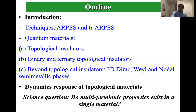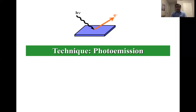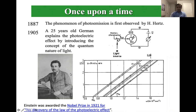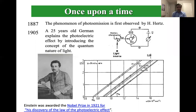Let's talk about the technique. Photoemission is simply a photon-in, electron-out process. You strike your sample with a photon and due to the photoelectric effect, electrons come out. This was observed by Hertz in 1887 and later explained by Einstein considering the quantum nature of light. The equation is: hν = hν₀ (work function) + E_B = ½mv², the basic photoelectric effect. Einstein was actually awarded the Nobel Prize for the discovery of the laws of photoelectric effect.